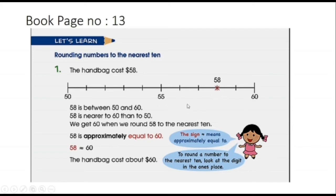Here you have to round off this 58 to 50 or to 60. You have to always look at the ones place of that number. If the number on the ones place is 5 or greater than 5, then you will always round up, means you will always move to the forward number, here it is 60.